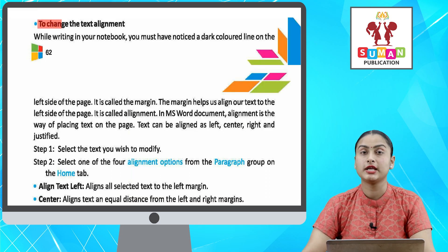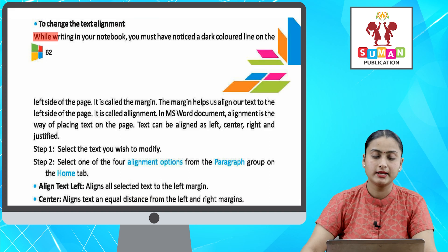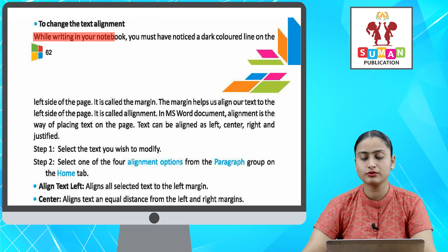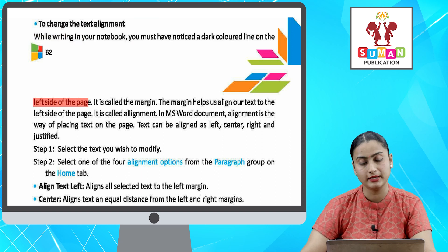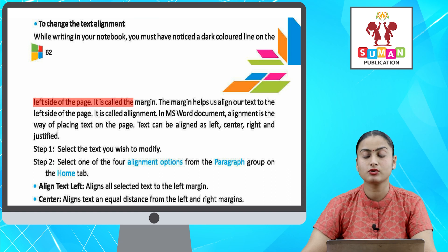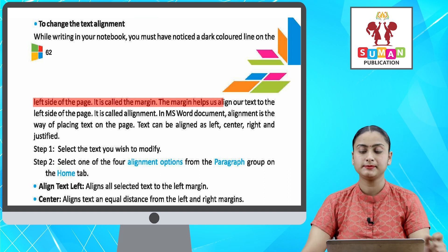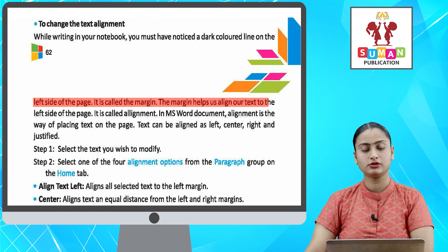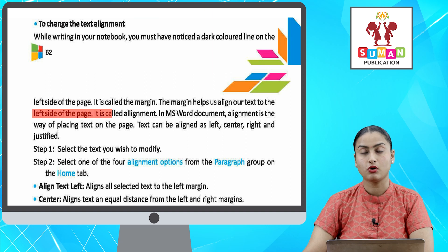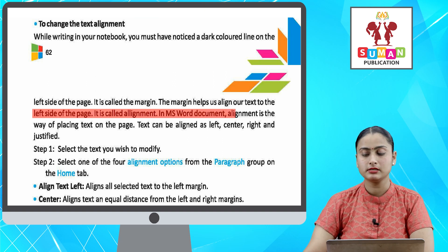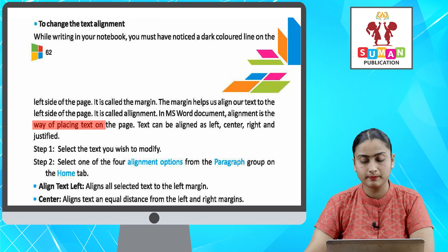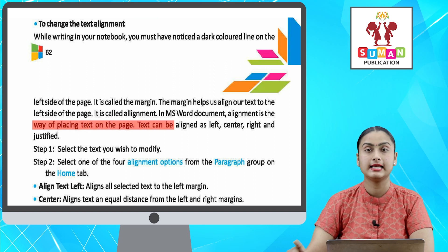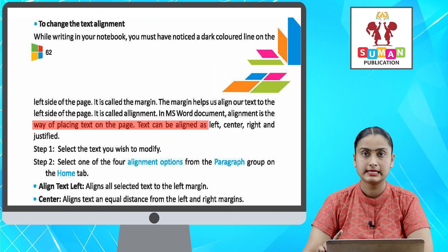To change the text alignment. While writing in your notebook, you must have noticed a dark colored line on the left side of the page — it is called the margin. The margin helps us align our text to the left side of the page — it is called alignment. In MS Word document, alignment is the way of placing text on the page.